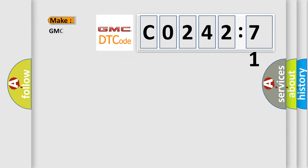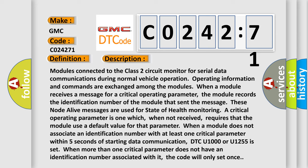So, what does the diagnostic trouble code C024271 interpret specifically for GMC car manufacturers? The basic definition is class 2 communication malfunction. And now this is a short description of this DTC code.